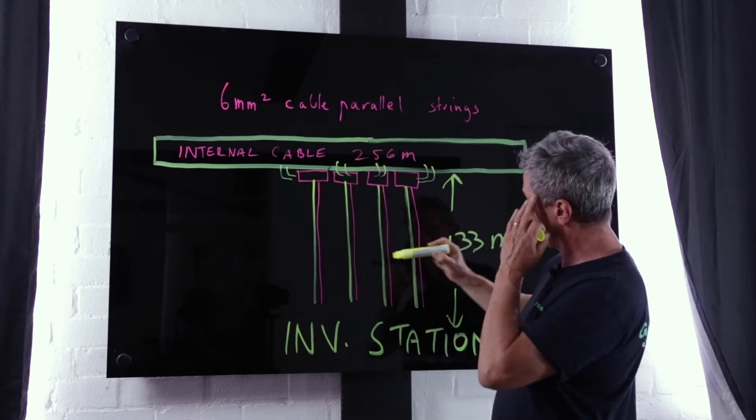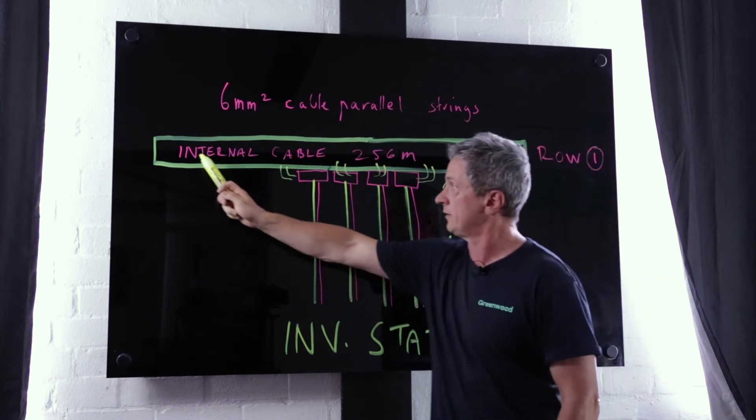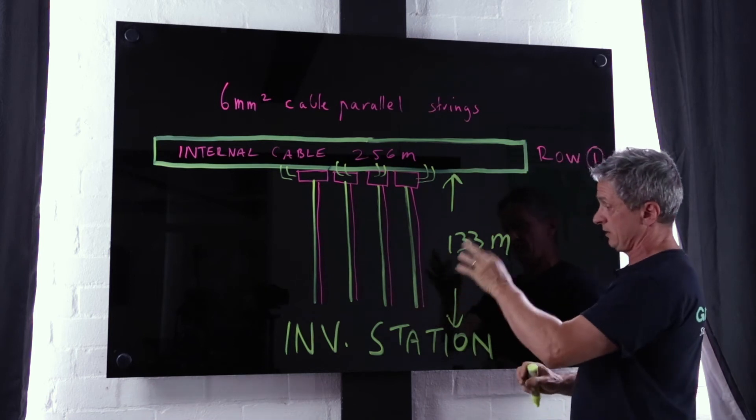Now in this case we're using 6mm cable. So straight away we've reduced the number of DC isolators by half.